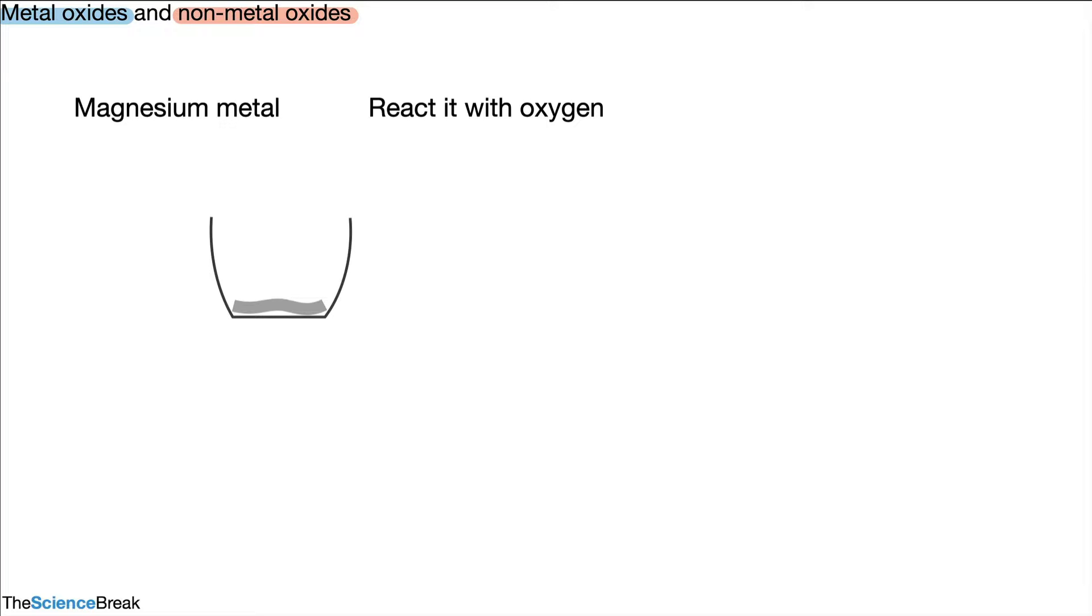We can put it into a little container called a crucible and heat it, usually with a Bunsen burner. After a while we get the production of something called magnesium oxide. There you can see the magnesium oxide in the little crucible. It's a white powder.